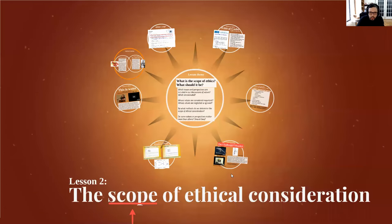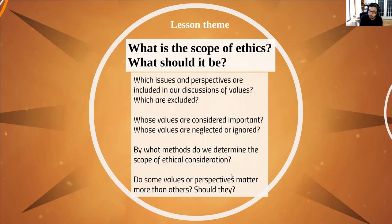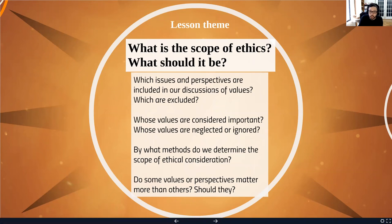This lesson, we're looking at the scope of ethical consideration. The kinds of questions we're asking this week are: what should be the scope of ethical consideration? What is the scope of ethical consideration for some particular decision or group? By scope I mean the extent covered by ethics — what considerations fall under ethics, who gets considered, what people, processes, and jobs fall under the scope of ethical consideration, and what maybe doesn't require ethical thought and discussion. Which issues and perspectives are included, which are excluded? Which values are considered important, and which are neglected or ignored?